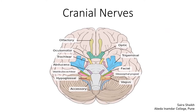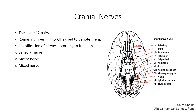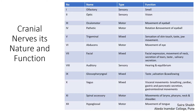Cranial nerves are also part of the peripheral nervous system. They arise from various regions of the brain and connect the CNS with voluntary organs and skeletal muscles. There are 12 pairs of cranial nerves, always denoted with Roman numerals. Based on their function, they are classified into three types: sensory nerves, motor nerves, and mixed nerves.